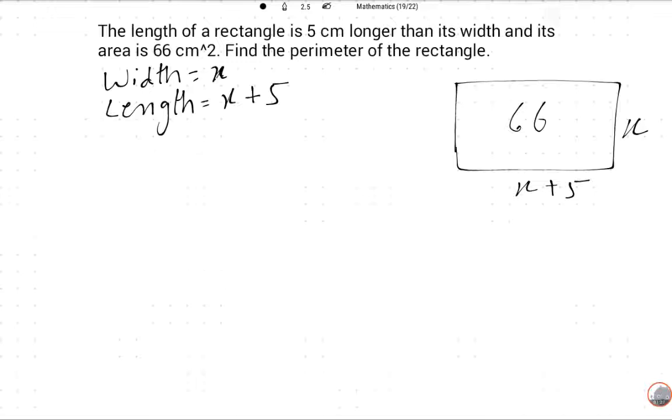Recall the formulas: area equals width multiply by length, and perimeter is 2 times width plus 2 times length.